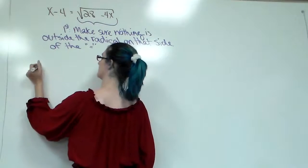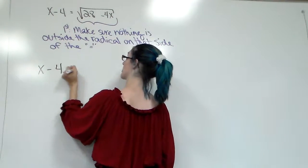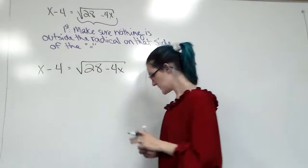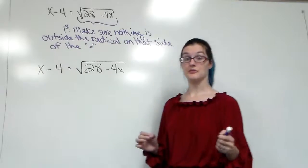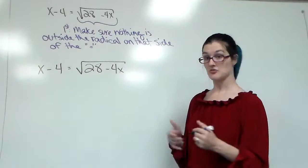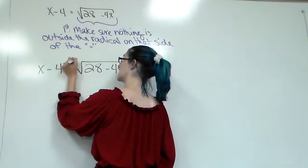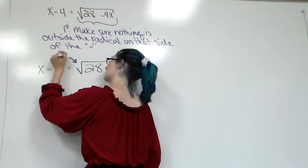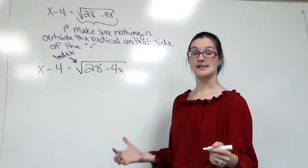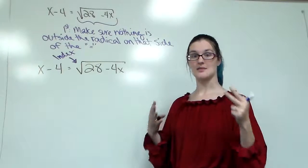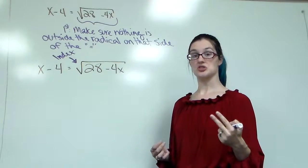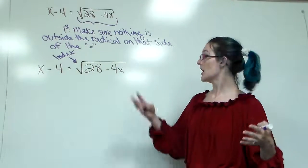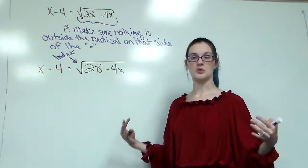So then we're going to take our problem. Since there's nothing outside, we don't have to worry about that. And we're going to try to get rid of the radical. So we have to identify our index. Remember, your index is the number that is inside of the radical telling you what type of root it is. Since this is a square root, our index is 2. Remember, anytime the index isn't written, you're going to assume it's a 2. We write the 3 for cube roots, we write the 4 for fourth roots, etc. Square roots are the only ones we don't write because they are our most common.